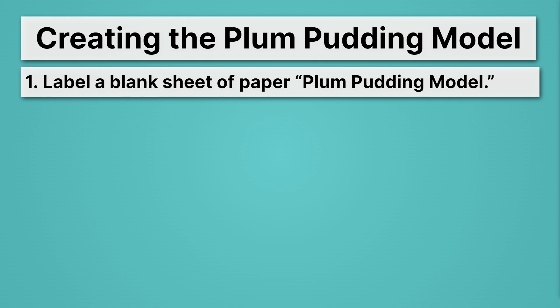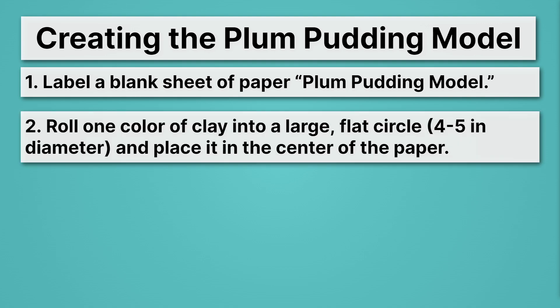First, label a blank sheet of paper, plum pudding model. Clever title, I know. Then roll one color of clay into a large flat circle, four to five inches in diameter, and place it in the center of the paper.